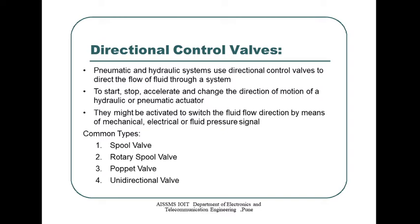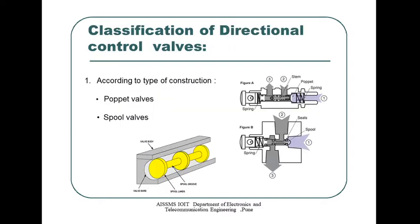Common types include spool valve, rotary spool valve, poppet valve, and unidirectional valve. Classification of directional control valves: according to the type of construction, these are categorized as poppet valves and spool valves.